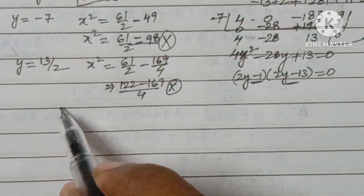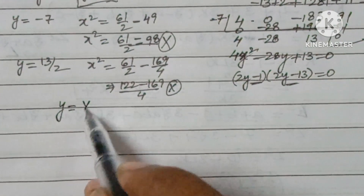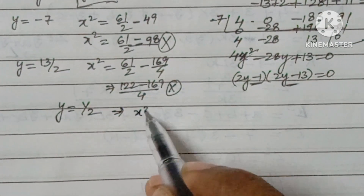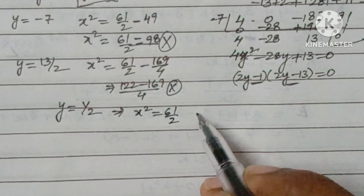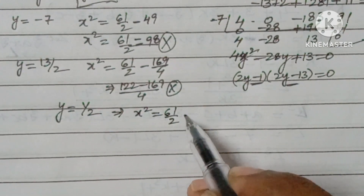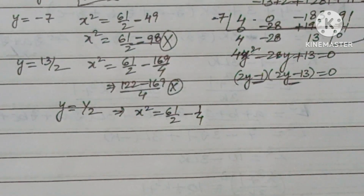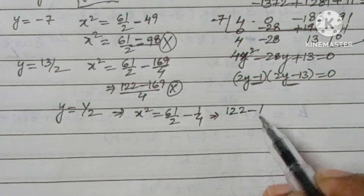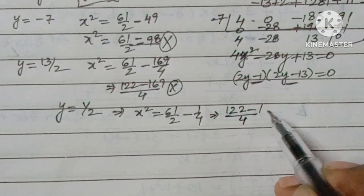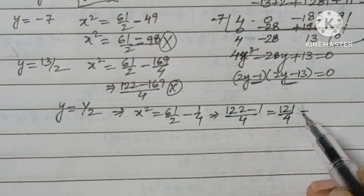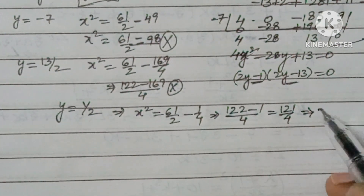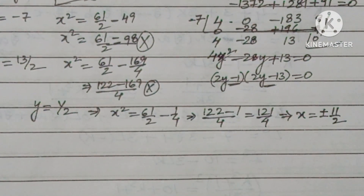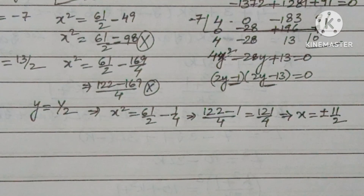The remaining value is y = 1/2. Then x² = 61/2 - (1/2)² = 61/2 - 1/4 = (122 - 1)/4 = 121/4. Taking the square root, x = ±11/2.